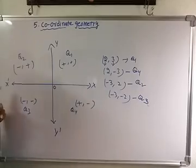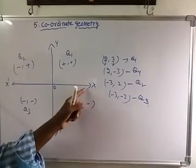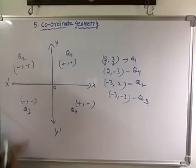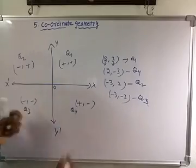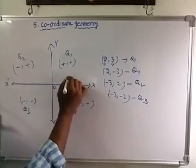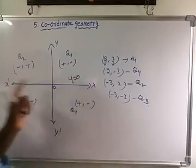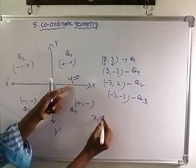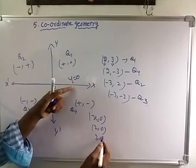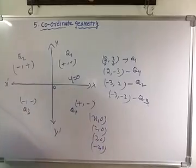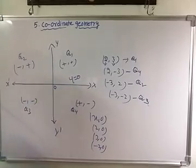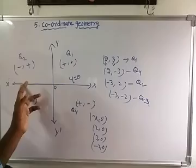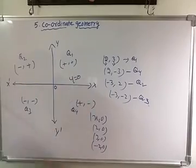Now, what is the point on the x-axis? On the x-axis, y values are 0, so the y coordinate is 0. Therefore, the point on the x-axis is of the form (x, 0) — for example, (2,0), (3,0), (-2,0). Therefore, the equation of the line of the x-axis is y = 0.